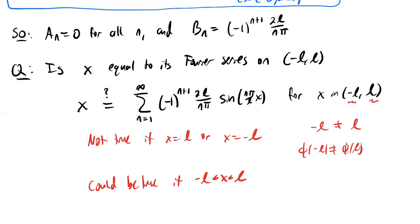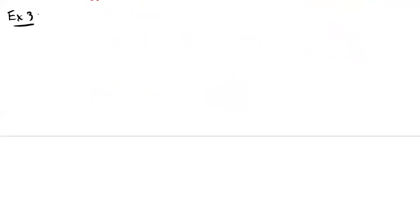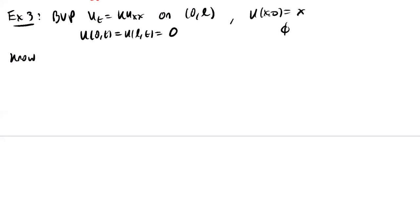I want to end this part with a PDE example, since we are ultimately trying to solve partial differential equations. We'll look at the diffusion equation on the interval between zero and L with boundary conditions u(0,t) = u(L,t) = 0 and initial condition u(x,0) = x. This is phi(x) = x, and we want to write down the expected solution.